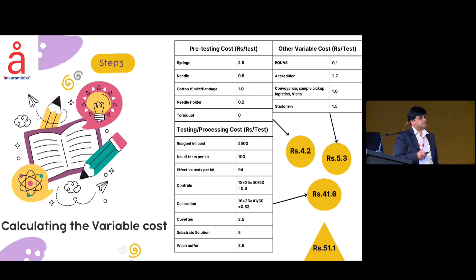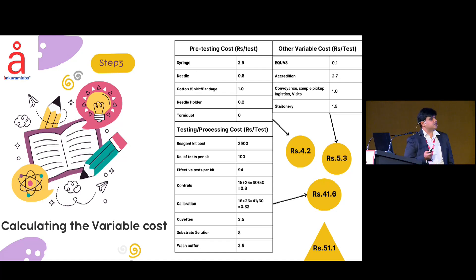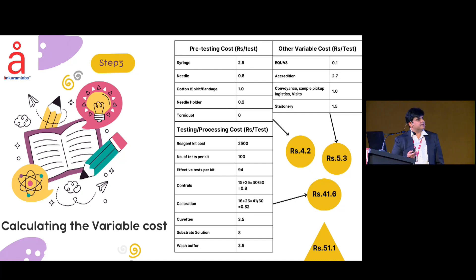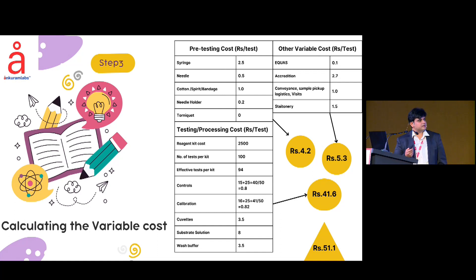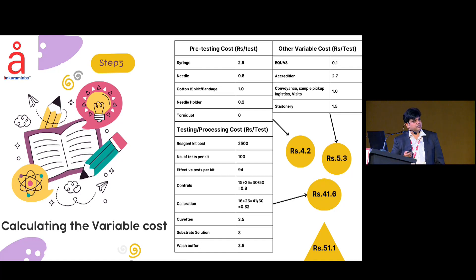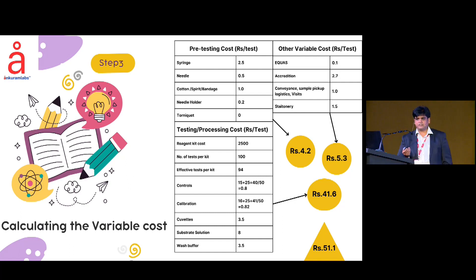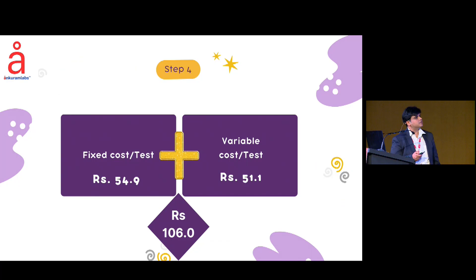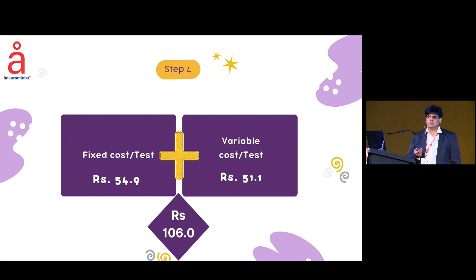Step 3 is calculating the variable cost. These include pre-testing costs — syringe cost, needle cost, cotton, spirit, and all those things — then the cost of the reagent, number of tests per kit, effective tests per kit, controls, and calibration. These break down to approximately 4.2 rupees, 5.3 rupees, and 41.6 rupees respectively. Total variable cost is around 51.1 rupees. Adding fixed cost and variable cost gives a total of approximately 106 rupees per test.